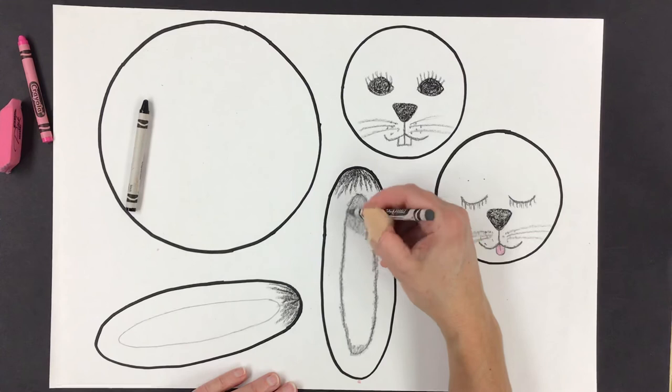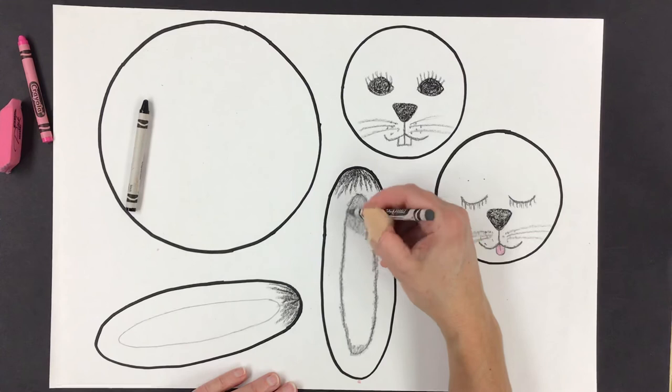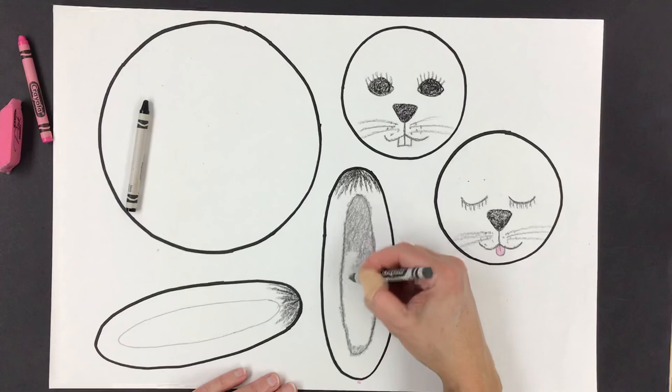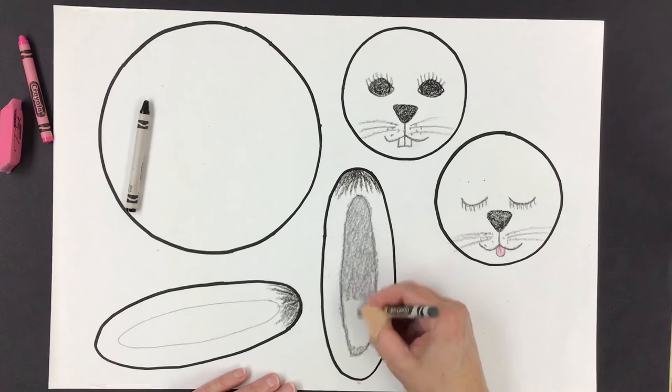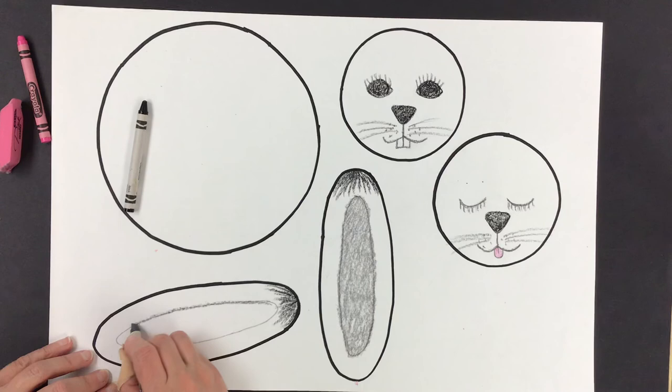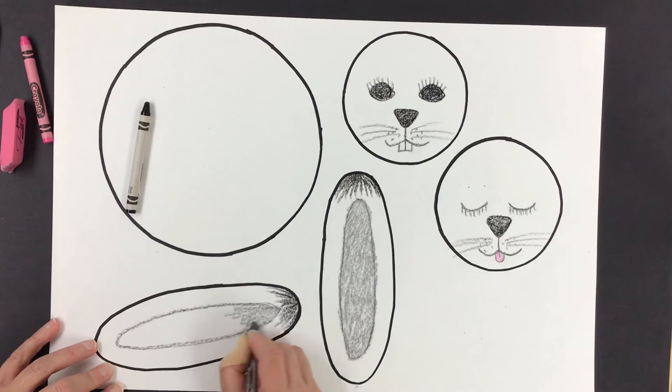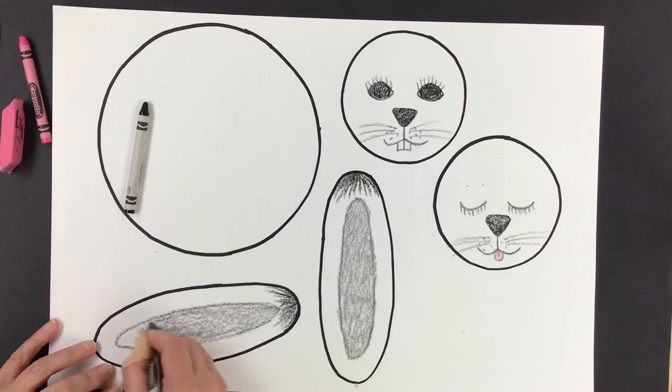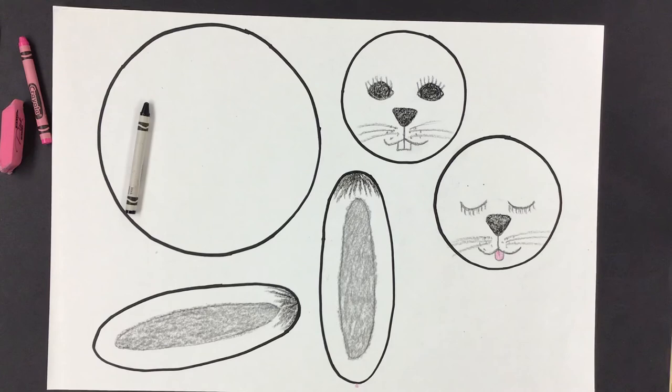Then, when I color it in one little part at a time. Working from one end to the middle to the other end. The edges still stay fuzzy. If I just outline it and color it in, it would look like this. I have a nice flat spot on my crayon, so it makes coloring in a lot faster. Okay. That's it.